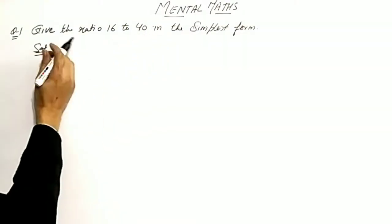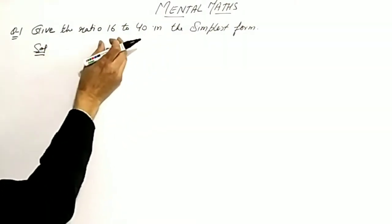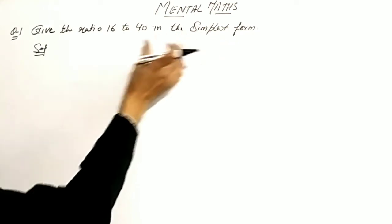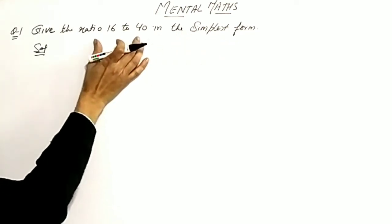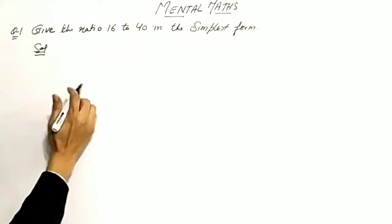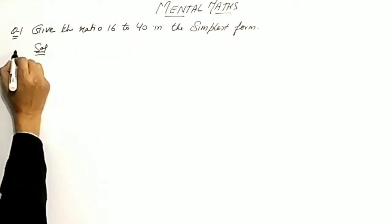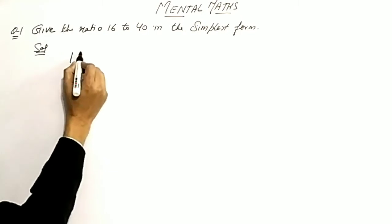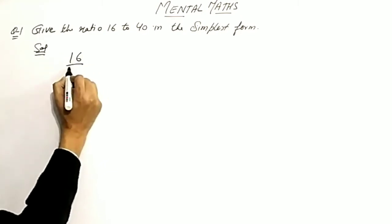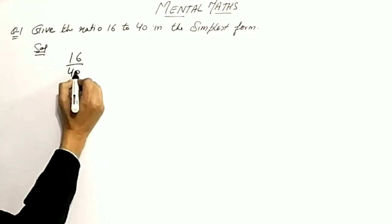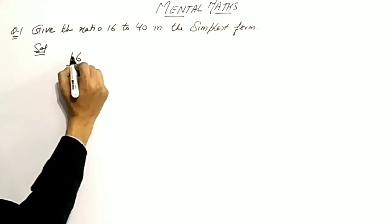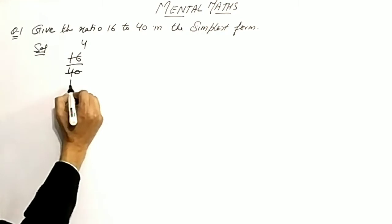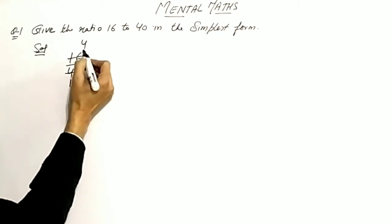Mental math question number one: give the ratio 16 to 40 in the simplest form. Looking at 16 upon 40, in the table of 4, it will come 4 times for 16 and 10 times for 40.